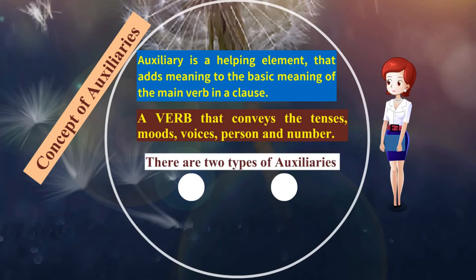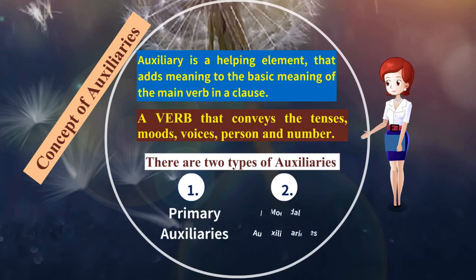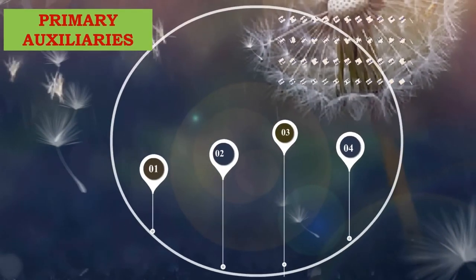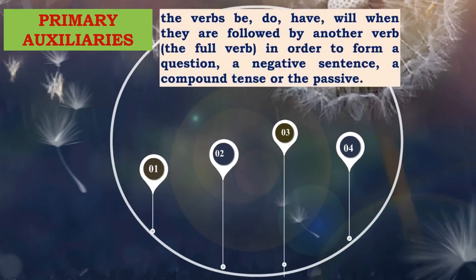There are mainly two types of auxiliaries: primary auxiliaries and modal auxiliaries. Primary auxiliaries are basic — the 'to be' form, the 'to do' form, 'to have', and 'will'. When these are followed by another verb — a full verb — they help form questions, negative sentences, compound sentences, or passive sentences. The four primary auxiliaries are: be, do, have, and will.